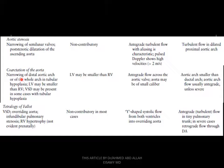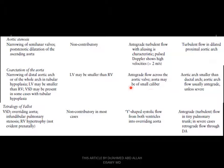Coarctation of the aorta: narrowing of the distal aortic arch or the whole arch, known as tubular hypoplasia. The left ventricle may be smaller than the right ventricle. VSD may be present in some cases with tubular hypoplasia. Four-chamber view: left ventricle may be smaller than right ventricle. Five-chamber view: antegrade flow across the aortic valve; aorta may be small caliber. Aortic arch is smaller than the ductal arch. Aortic arch flow is usually antegrade unless severe.